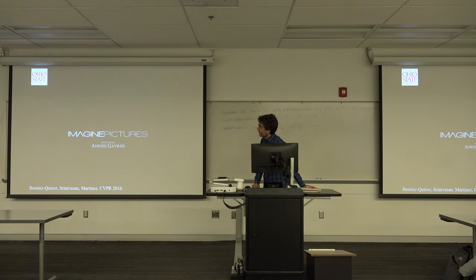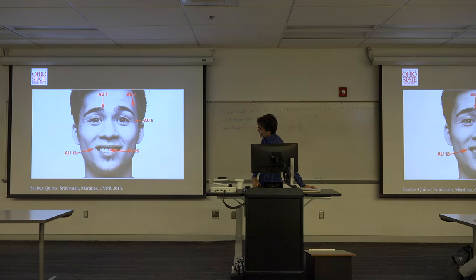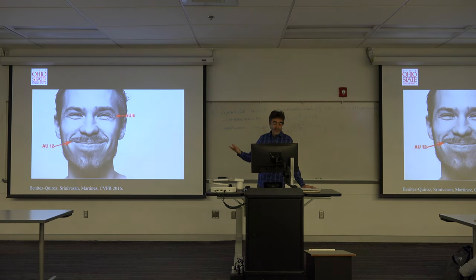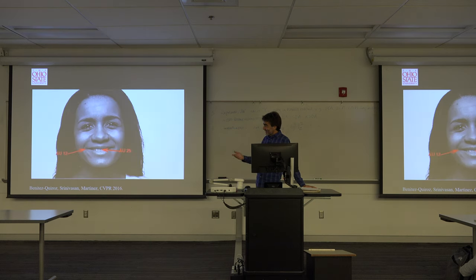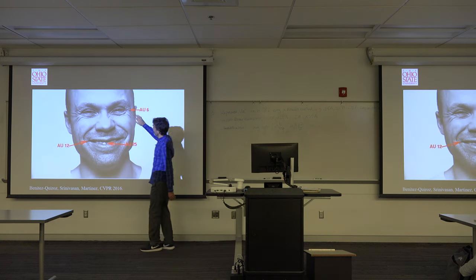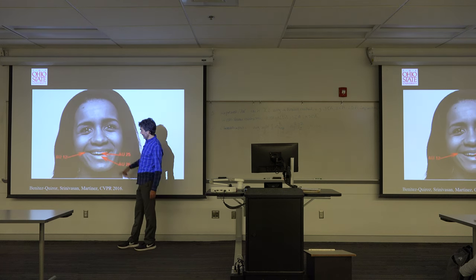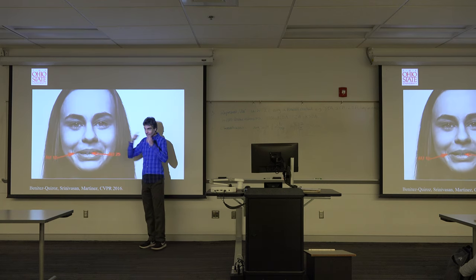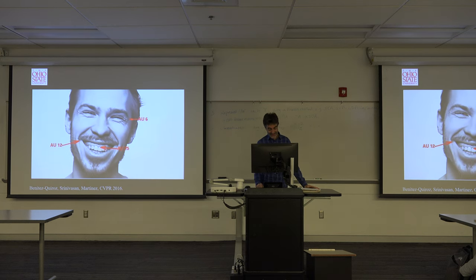Here's an example of one of these algorithms running on a video — actors moving their faces slowly on purpose. The algorithm identifies AU6 (cheek raiser), AU12 (classical smile), AU25 (mouth open), AU9 (nose wrinkle of disgust), and so on. So it was a happily disgusted expression.